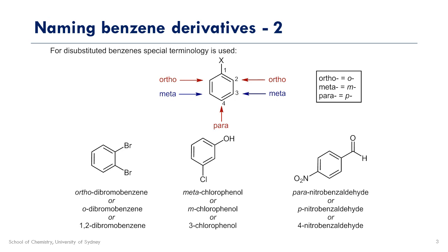Once we know where our reference carbon is, we're going to count around the ring, starting with 1 on the reference, and going in the direction that minimizes the number of the other substituent — so it will either be a 2, a 3, or a 4. These relationships are given special names: the ortho position is labeled as number 2, meta is number 3, and para is number 4. These are abbreviated O, M, and P.